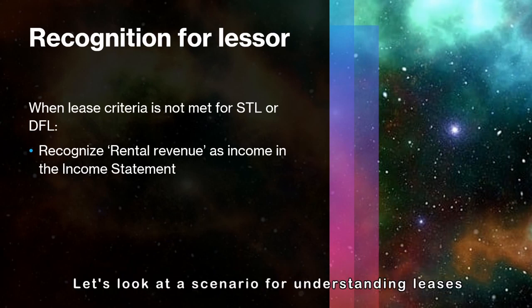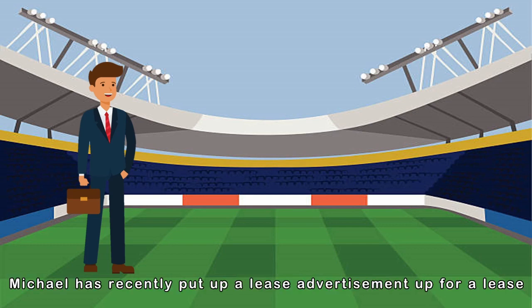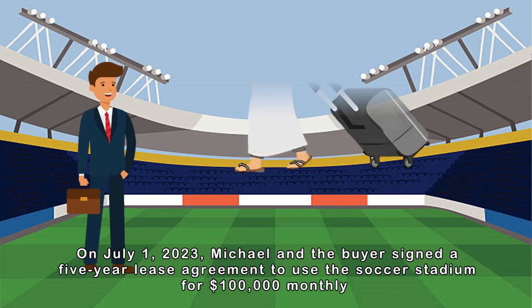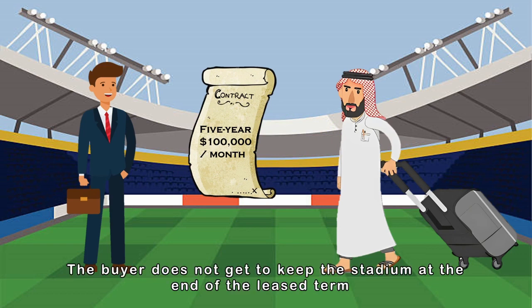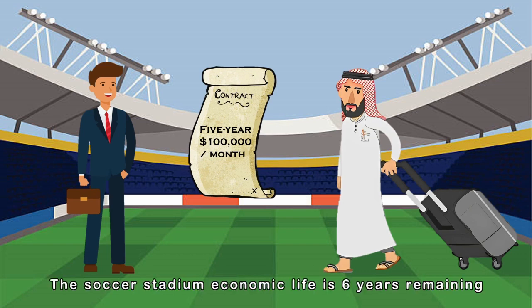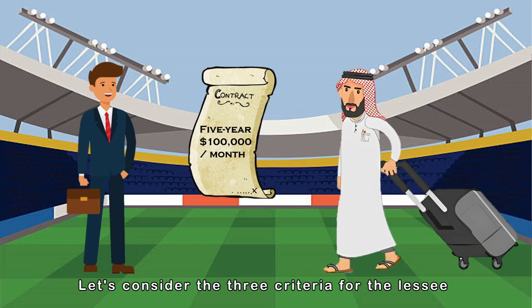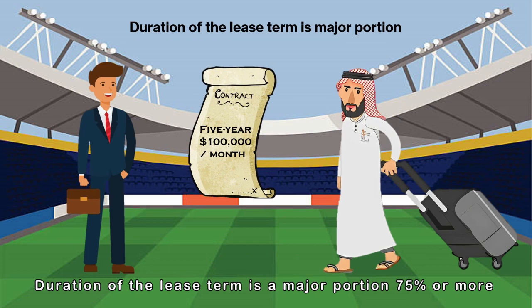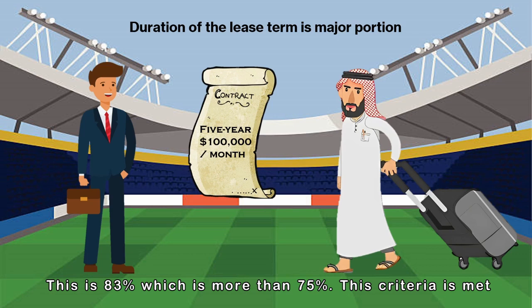Let's look at a scenario for understanding leases. Michael owns a soccer stadium in London and has recently put up a lease advertisement. On July 1st, 2023, Michael and the buyer signed a 5-year lease agreement to use the soccer stadium for $100,000 monthly. The buyer does not get to keep the stadium at the end of the lease term. The soccer stadium's economic life is 6 years remaining and its fair value is $7 million. For the second criterion, the stadium's economic life is 6 years and the buyer signed a 5-year lease — this is 83%, which is more than 75%, so this criteria is met.